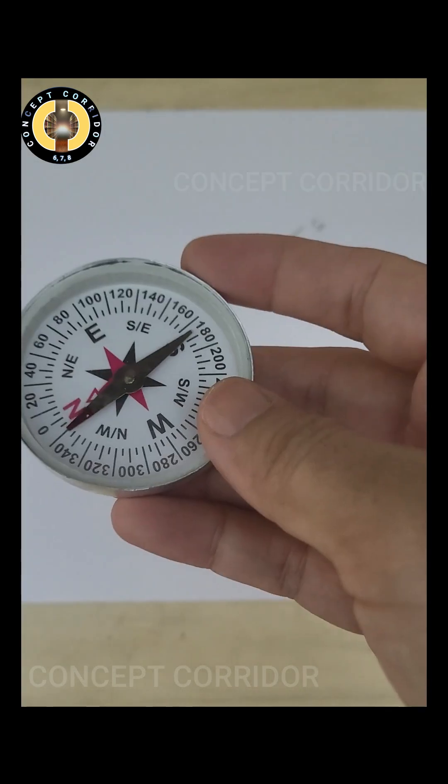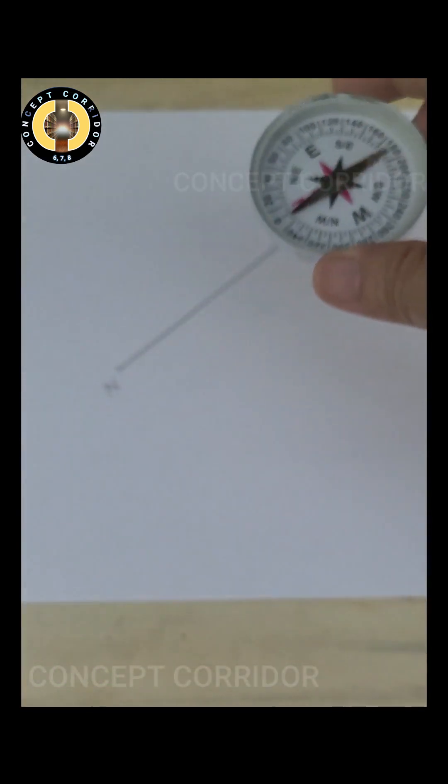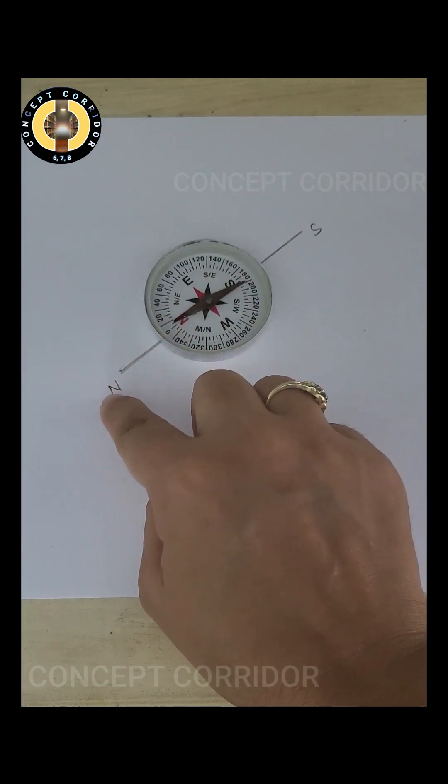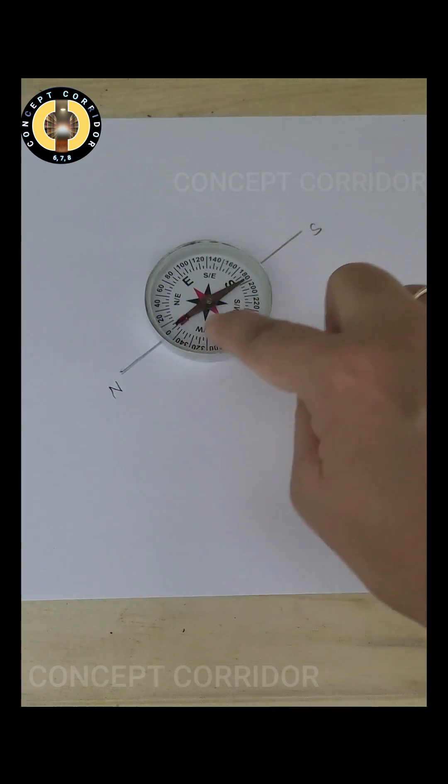Now place this magnetic compass over this line in such a way that north of the magnetic compass should align to the north of this line and south of this magnetic compass should align to the south.